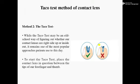Number two: the taco test. The taco test may be an old school way of figuring out whether our contact lenses are right side up or inside out, but it remains one of the most popular approaches patients use. To start the taco test, place the contact lens in question between the tips of our finger and thumb.